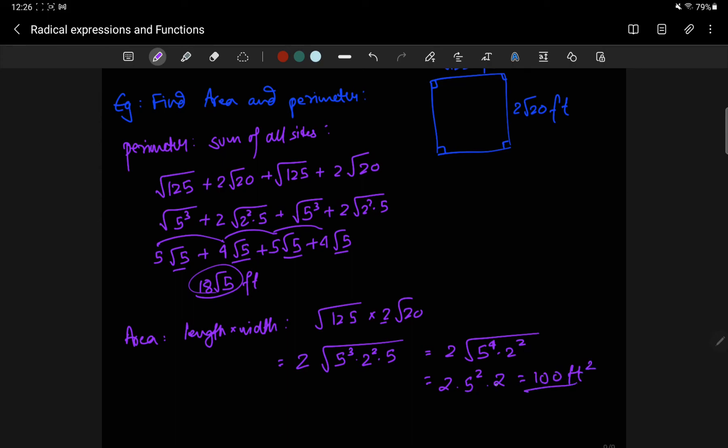The area does not have any radical in it. So, here you could have done this extra step, which is 2 times 5 to the 4, 2 squared to the 1 half, which becomes 5 to the 4 to the 1 half, times 2 to the 1 half, which is 5 to the 4 times 1 half, and 2 to the 2 times 1 half, which gives you 2 times 5 squared times 2.